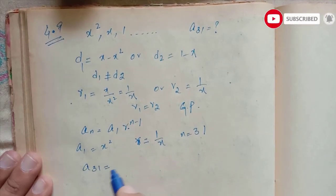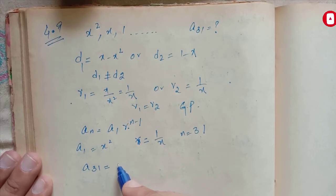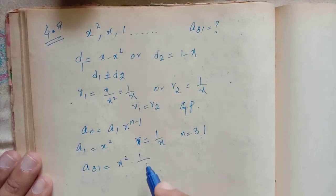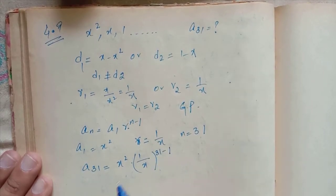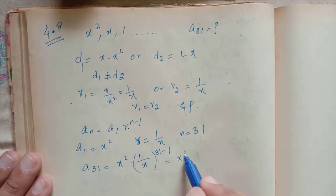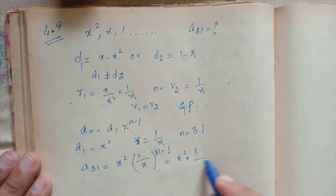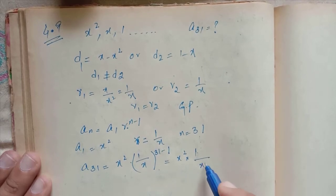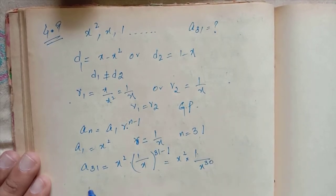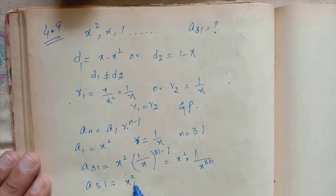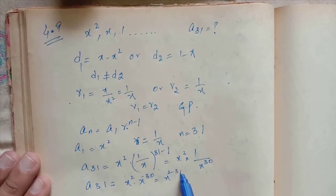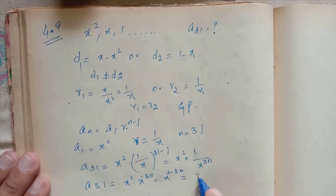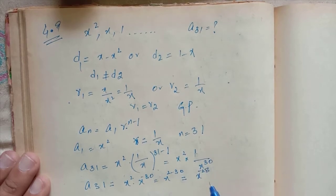a31 equals x² × (1/x)^30. This equals x² × x^(-30), which equals x^(2-30) = x^(-28) = 1/x^28. The option of this question is option number C.